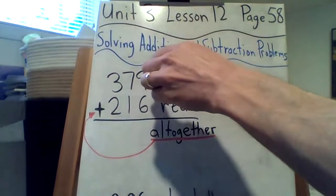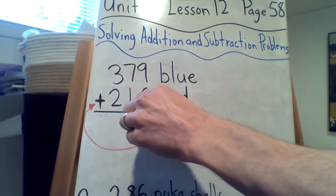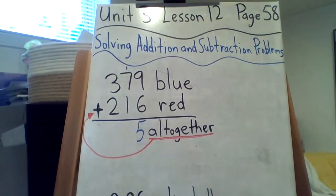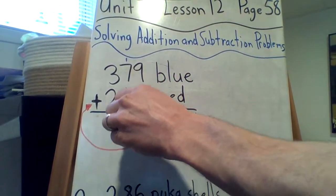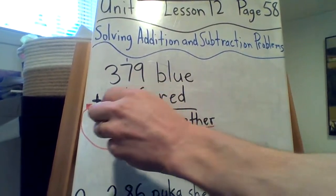Here we go. 9 plus 6, 15. So we put the 5 in the 1's place, add that 1 into the 10's place. 1 plus 7 is 8, plus 1 more is 9. And then 3 plus 2, of course, is 5.